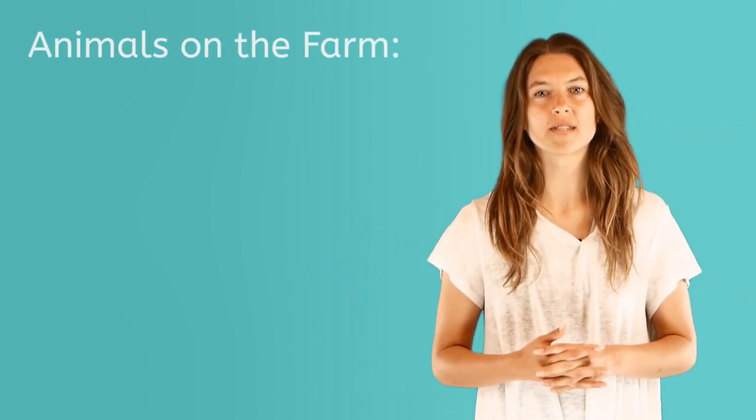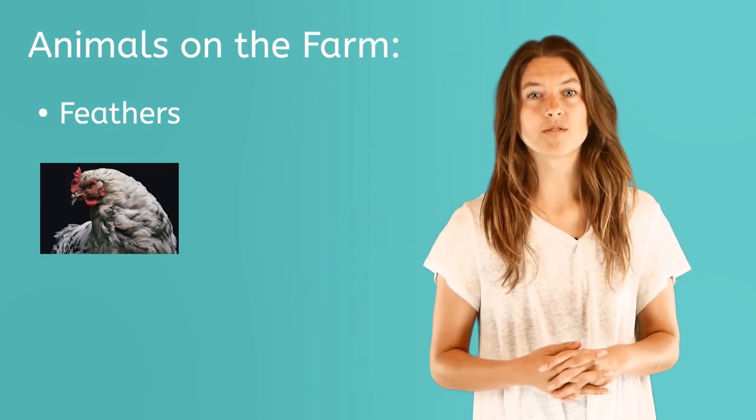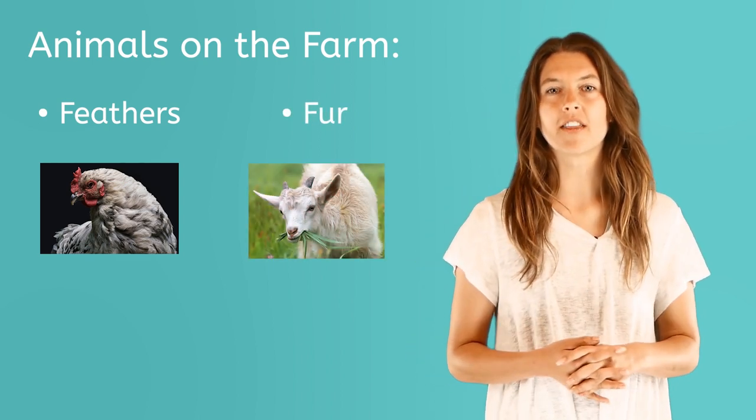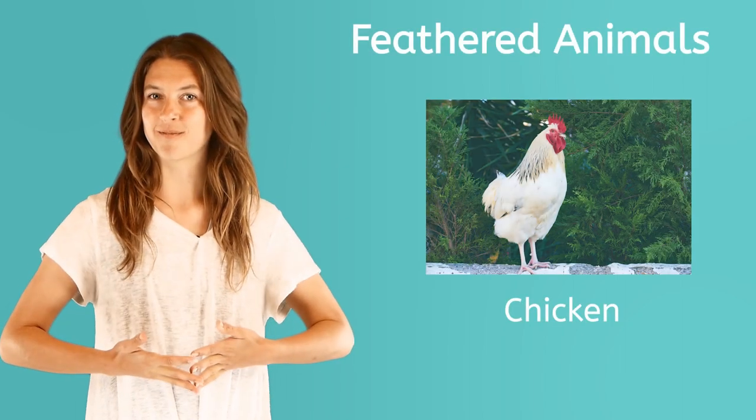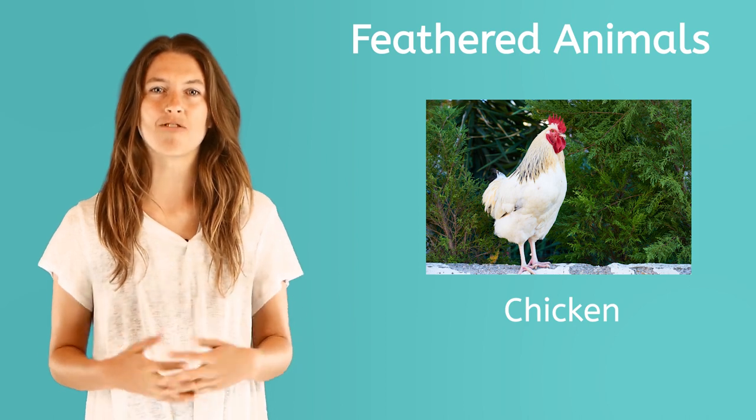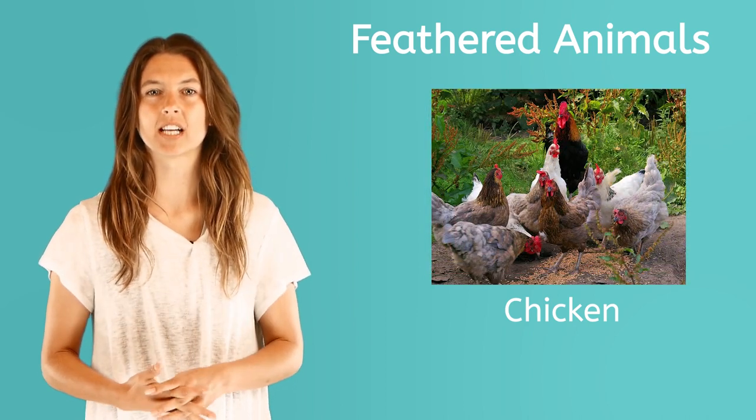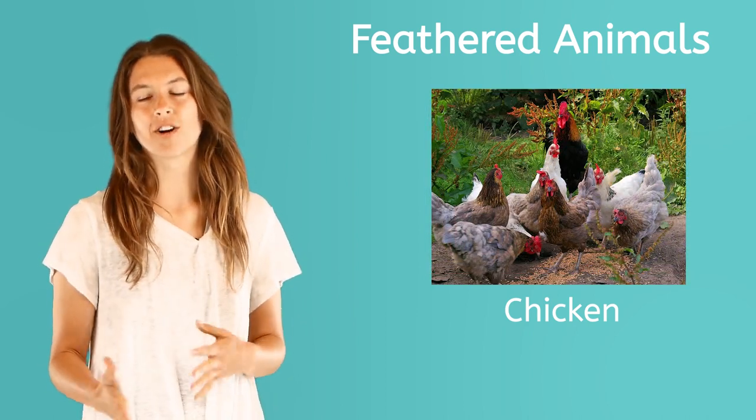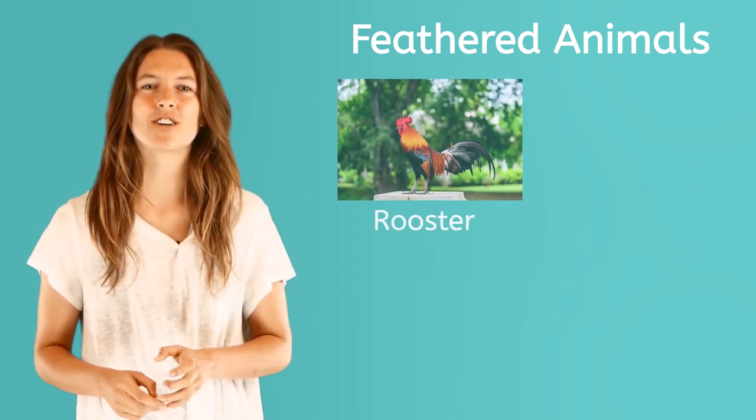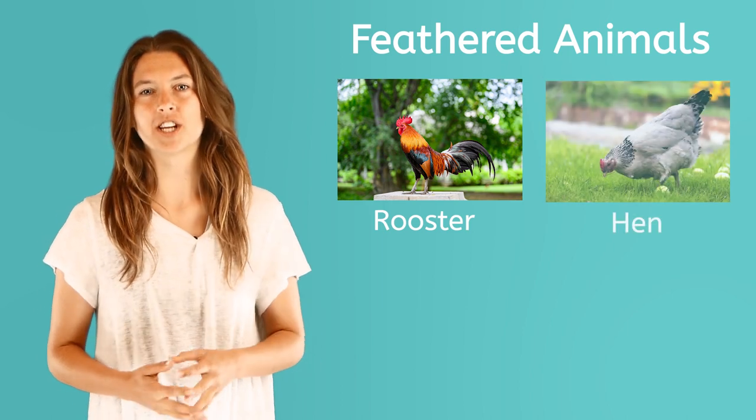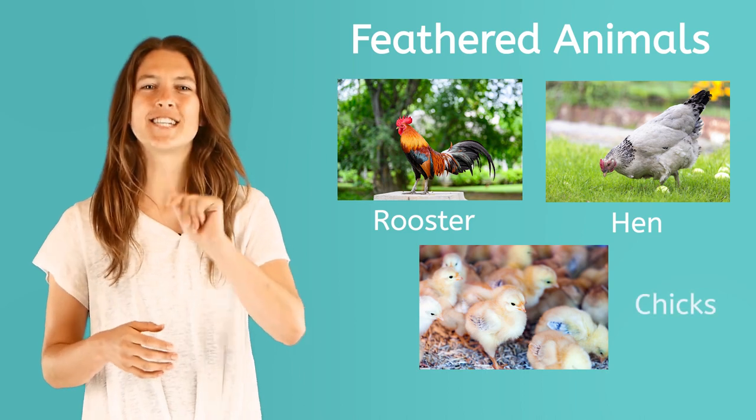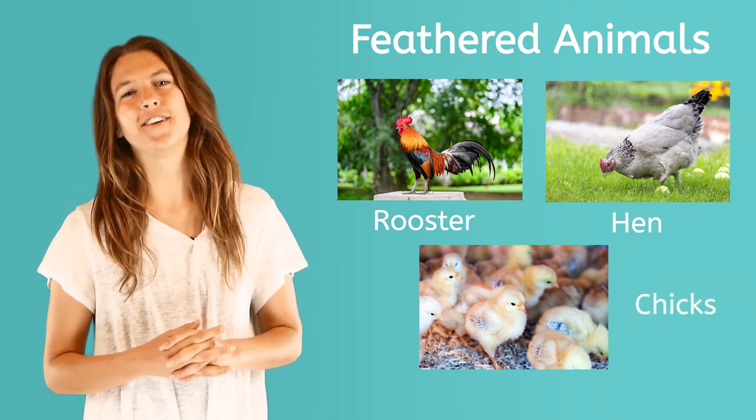There are two main groups of animals that live on the farm. There are animals with feathers and animals with fur. Let's start with the feathered animals first. This is a chicken. Cluck, cluck. A chicken has feathers. Sometimes they have white feathers, but you might also find chickens with brown or black or a combination of colors. A male chicken is called a rooster, and a female chicken is called a hen. What are baby chickens called? Yes, chicks. So cute.